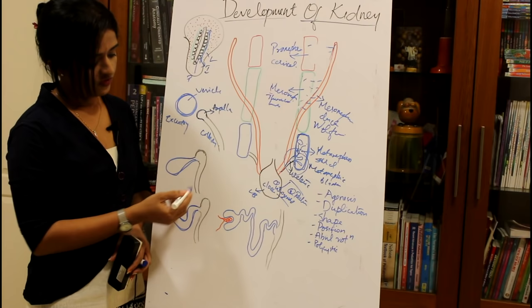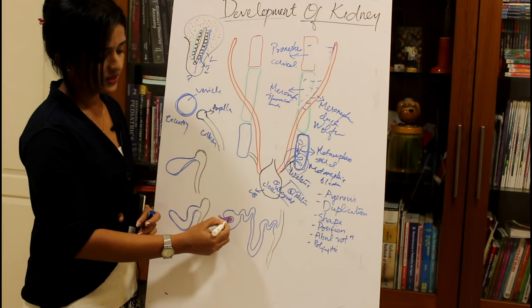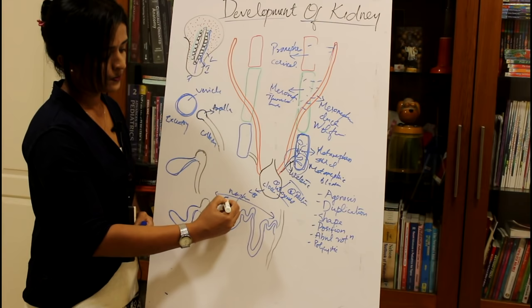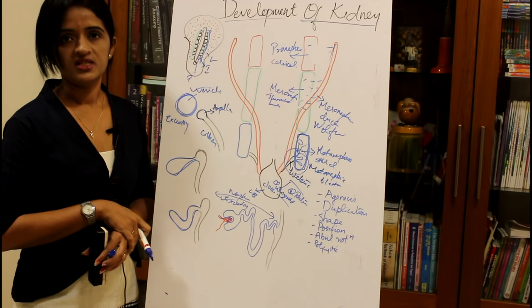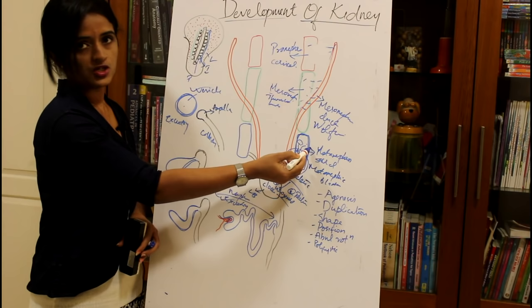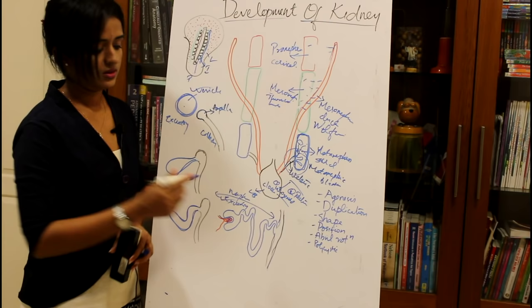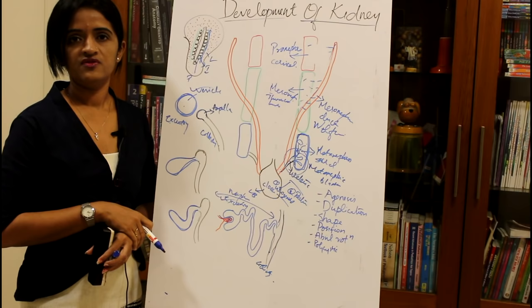The S-shaped tube further develops into the nephron. Capillaries invaginate into the distal end, forming the future glomerulus. The excretory portion (the nephron) is derived from the vesicle developed from the metanephric blastema. The ureteric bud divides to form the collecting tubules and collecting ducts, constituting the collecting portion of the kidney.